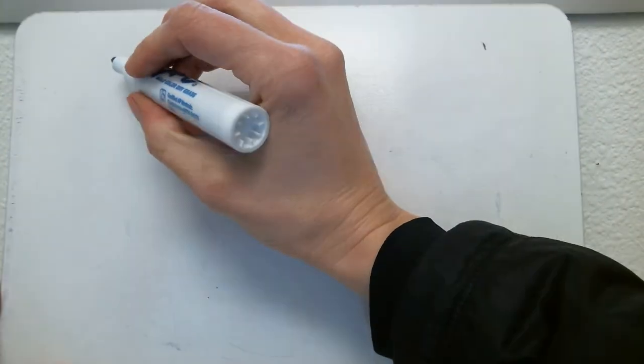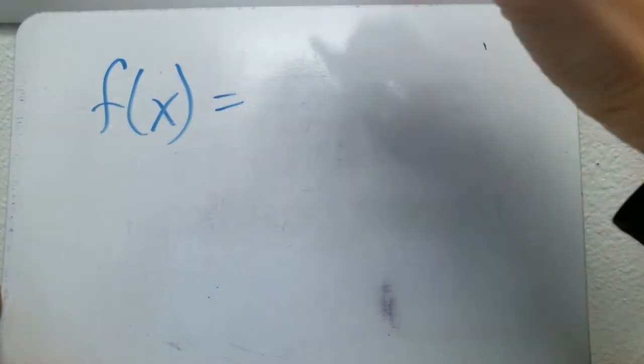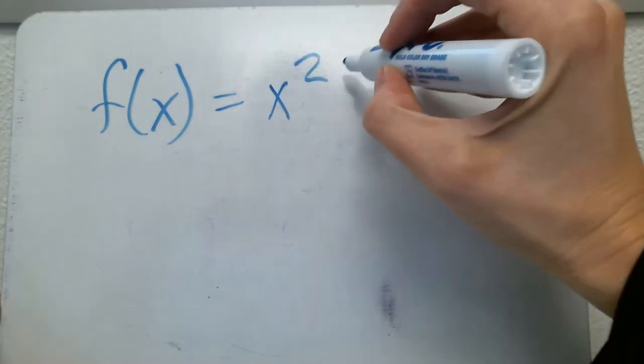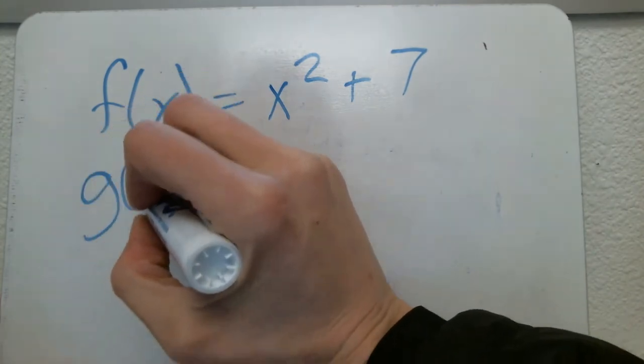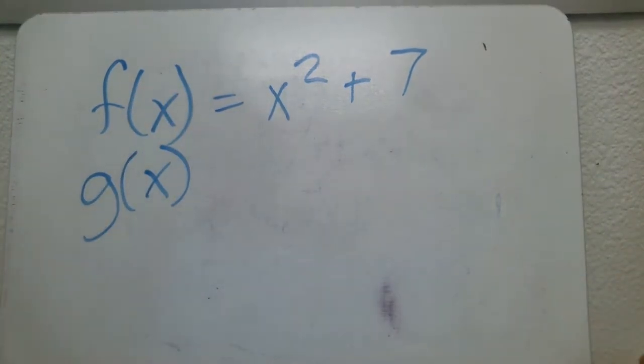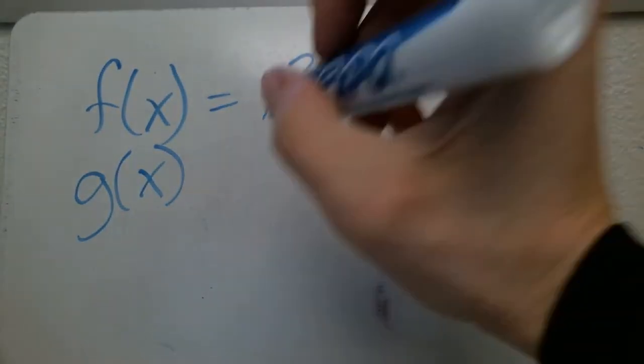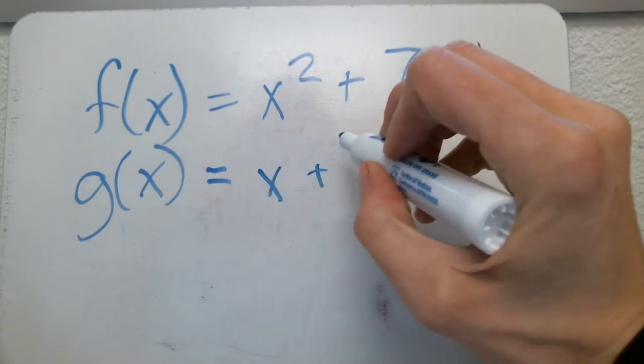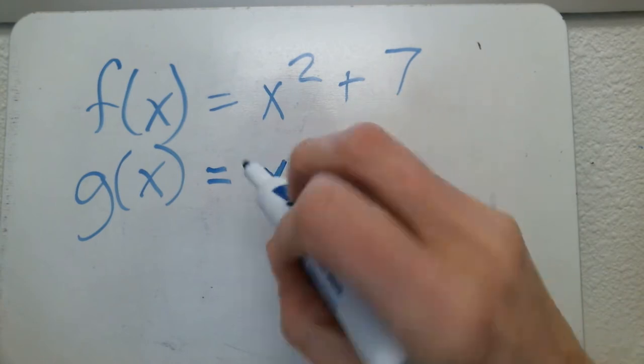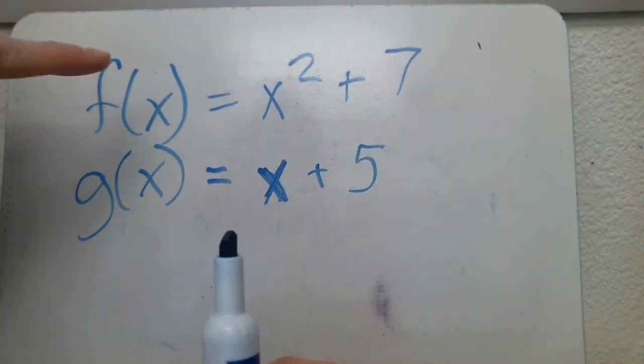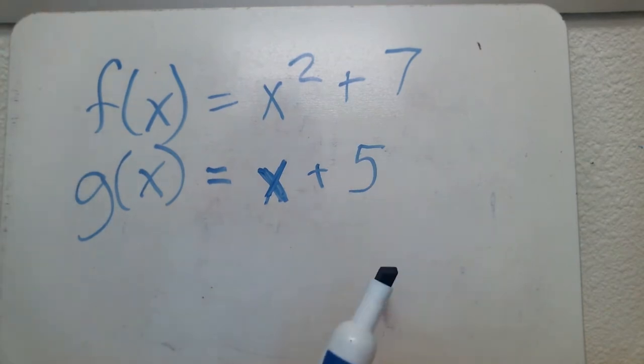It's not always an f that we see in functions. Sometimes we use a g or a k or a z — any letter can represent a function. So we had f of x equals x squared plus 7, but we could also call a function g of x. Maybe g of x equals x plus 5. It doesn't matter what letter you use — this is just referring to two different functions, two different graphs.